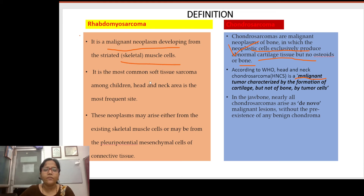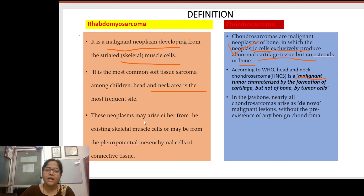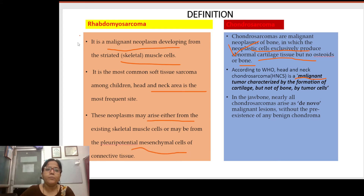Rhabdomyosarcoma is the most common soft tissue sarcoma among children, and the head and neck area is the most frequent site. These neoplasms may arise either from existing skeletal muscle cells or from pluripotential mesenchymal cells — a very important term.